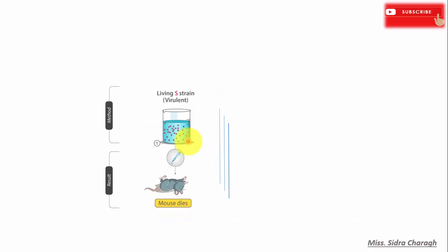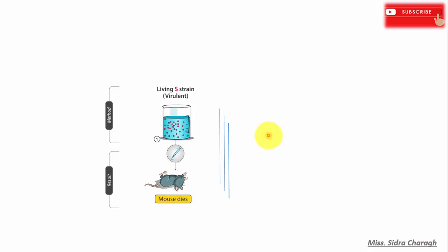When cells of S strain are injected into mice, the mice die. Whereas when cells of R strain are injected into mice, the mice survive.